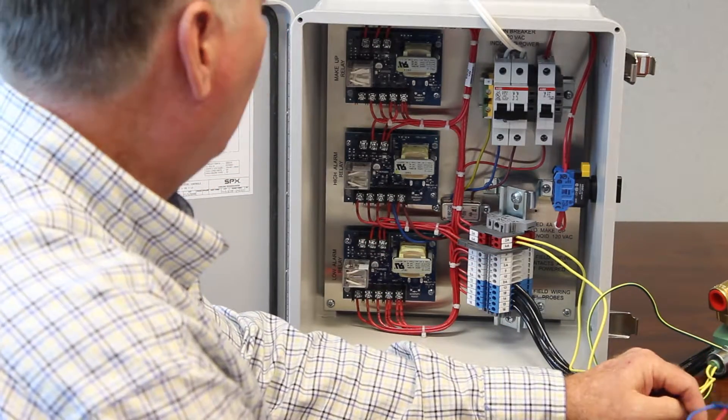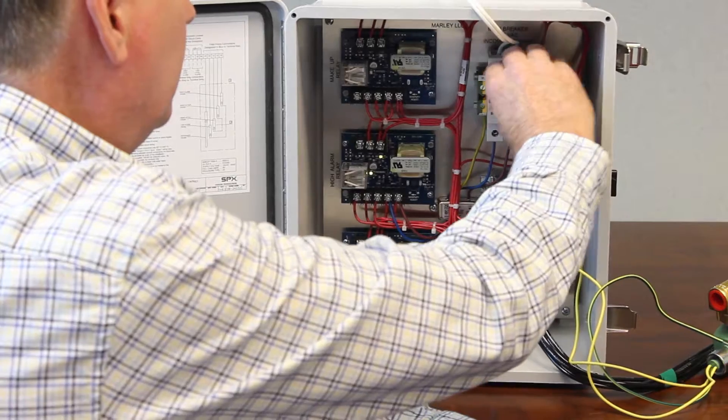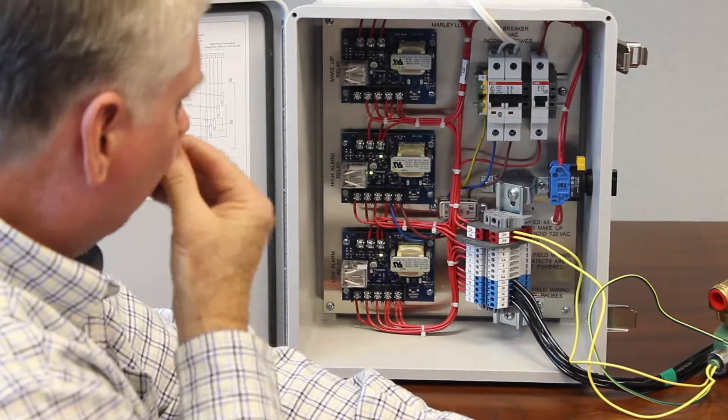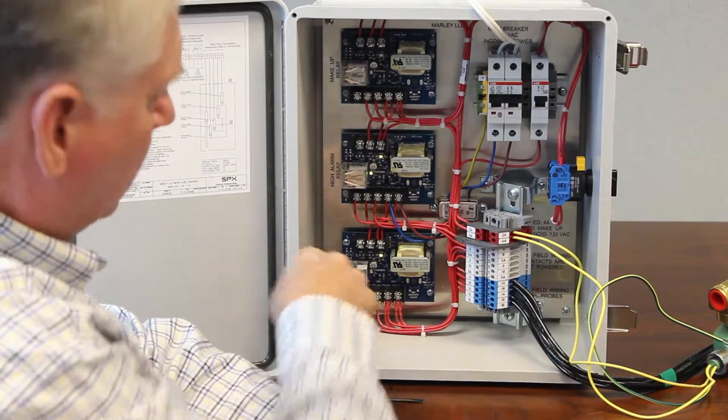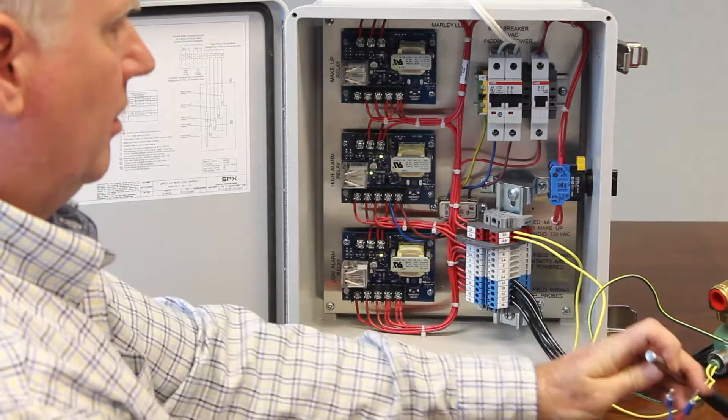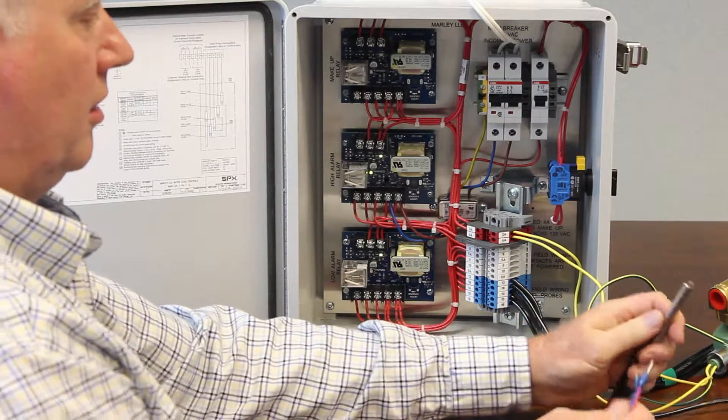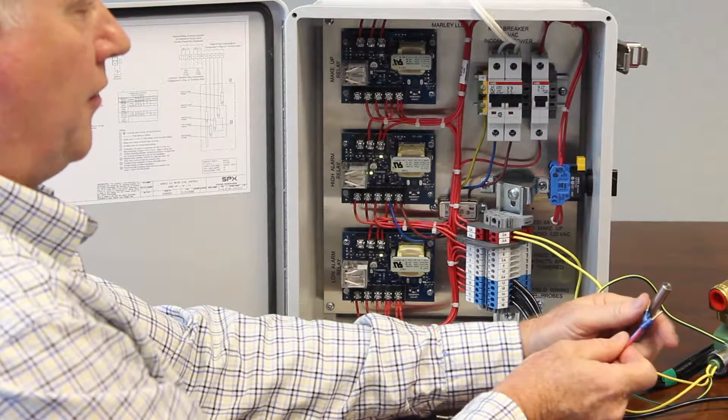So we're going to do a low alarm first. I'll go ahead and turn power back on. Lights on my cards have come on. The low alarm relay is the bottom one. So I'm going to go out to the tower and I'm going to put a jumper on my reference probe.